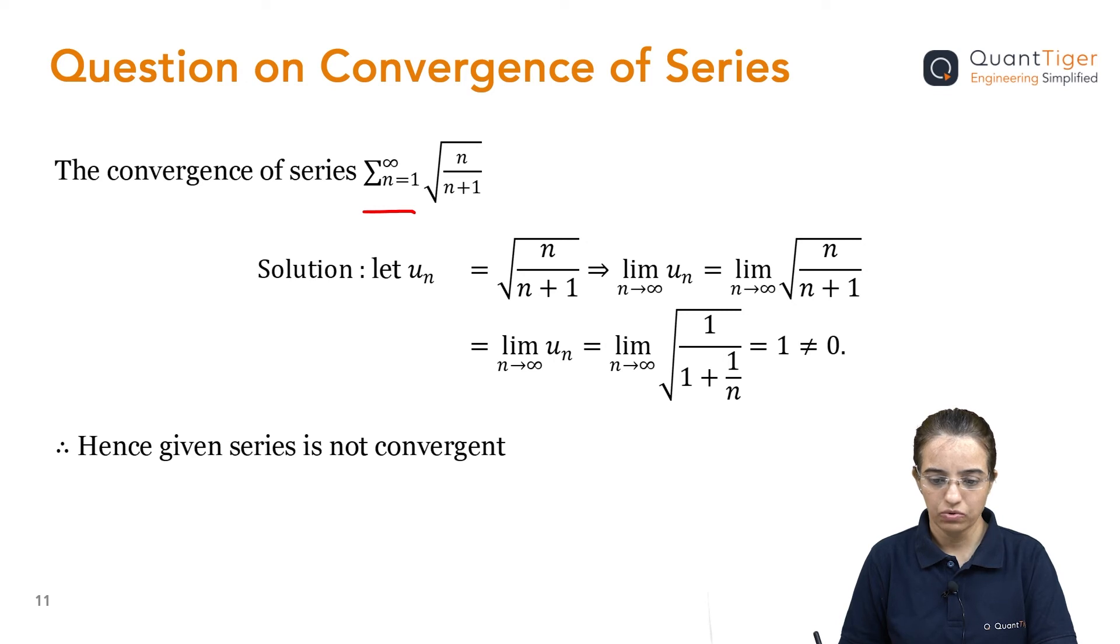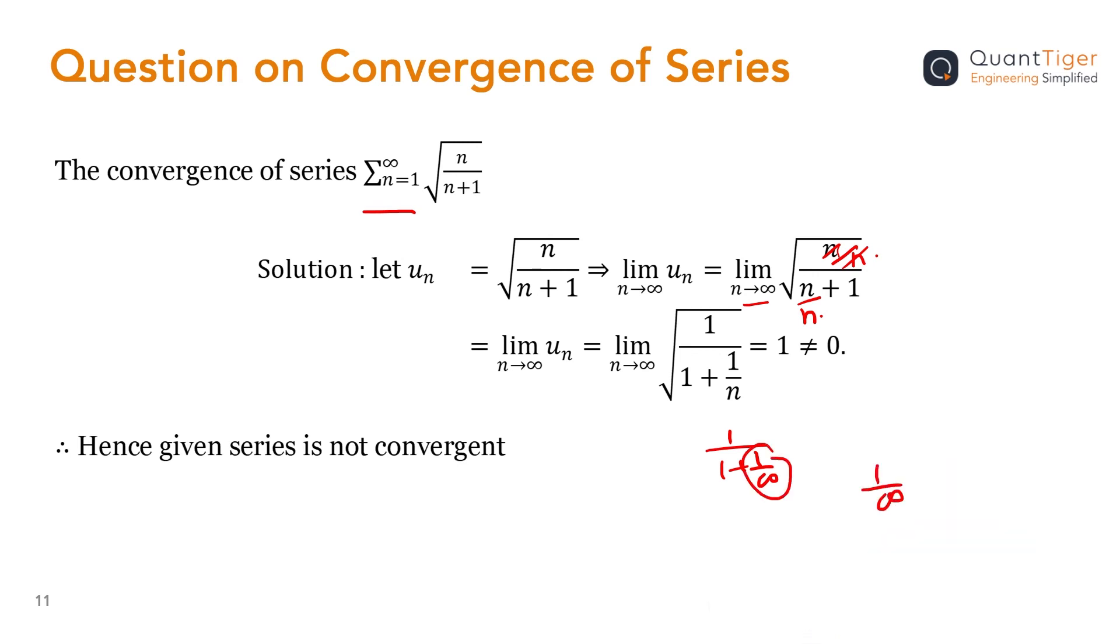To simplify, first of all, we will write in terms of limits. Then, to simplify the numerator and denominator, I will divide by n, so that I will be able to substitute n's value. I have divided here by n and here also by n. After simplification, I will get 1/(1 + n/n). If I substitute this value, 1/∞ equals 0, then it will be 1/(1+0), which equals 1, which is not equal to 0.